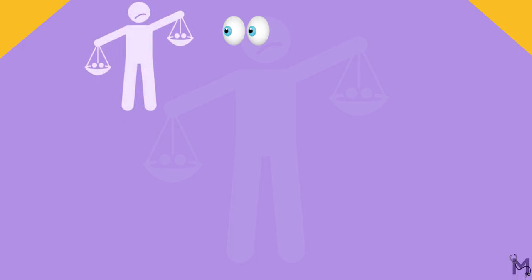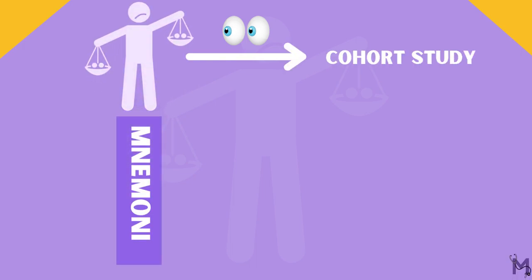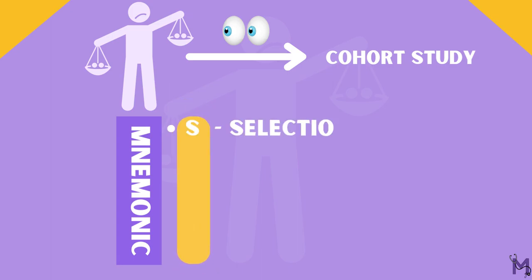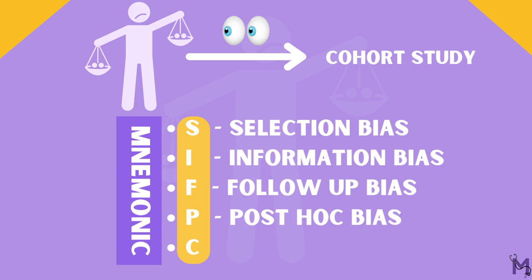Let's see the different types of bias in a cohort study now. We can use the mnemonic SIFPC, where S is selection bias, I is information bias, F is follow-up bias, P is post-hoc bias, and C is confounding bias.